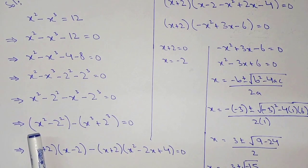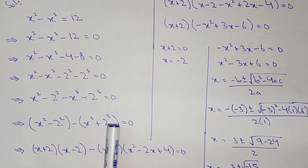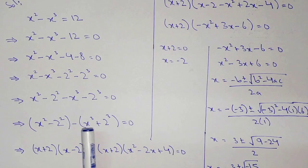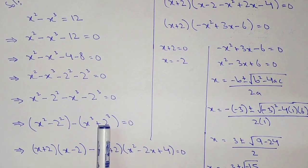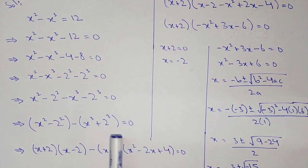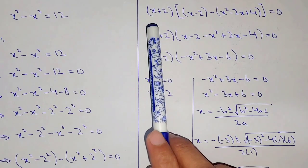Now applying the formula a squared minus b squared equal to a plus b into a minus b, so we get x plus 2 into x minus 2. Then applying the formula a cubed plus b cubed equal to a plus b into a squared minus ab plus b squared, giving x plus 2 into x squared minus 2x plus 4.